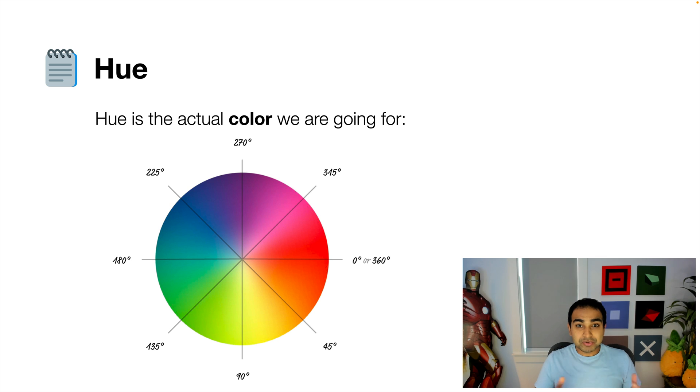Let's start with hue. Hue is the actual color we're going for, and this color is represented as a degree value somewhere in the color wheel. So you can see the color wheel has 360 degrees as all circles go, and then each degree maps a particular color. So you can see that, for example, at the 315-degree mark, we are at a pinkish-reddish color. At the 90-degree mark, it's a yellowish-green, and so on.